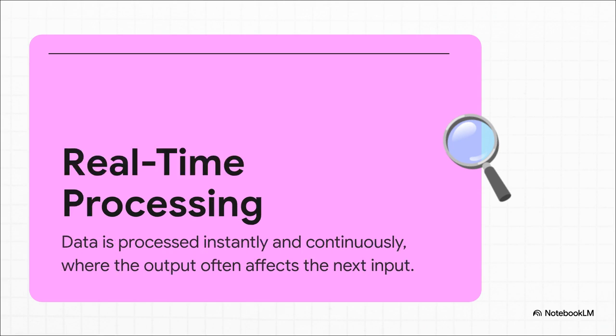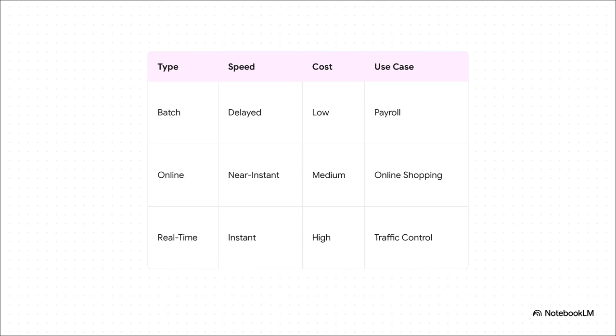And then there's the final and fastest type: real-time processing. This is for systems where any delay is a huge problem. For our online store, the inventory system is the perfect example — the very moment your purchase goes through, the real-time system subtracts one from the stock count, which immediately changes what the very next customer sees. It's a constant, instant feedback loop. When you lay it all out, you can really see the trade-offs: batch processing is slow and cheap, perfect for stuff like payroll. Online processing gives us that near-instant feel when we're shopping. And real-time is the fastest and most expensive, saved for mission-critical things like air traffic control, where a delay is just not an option.